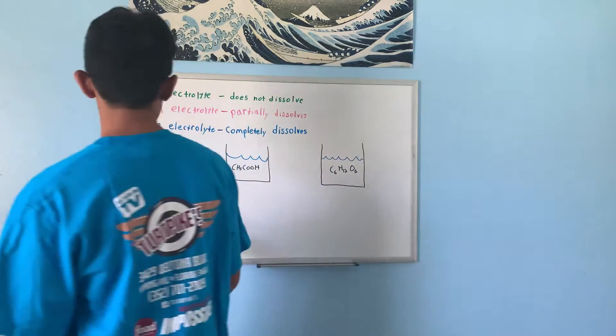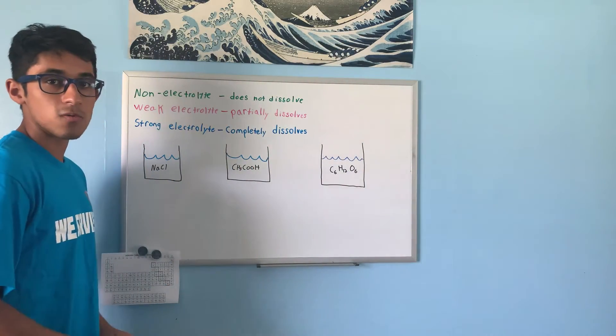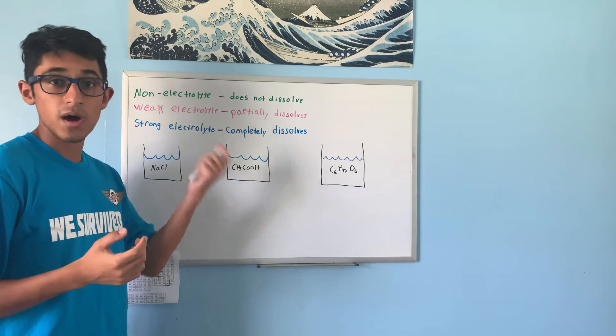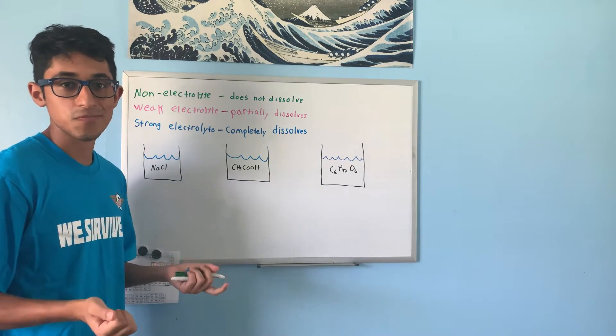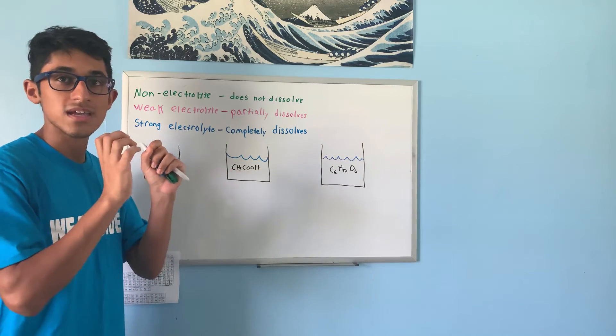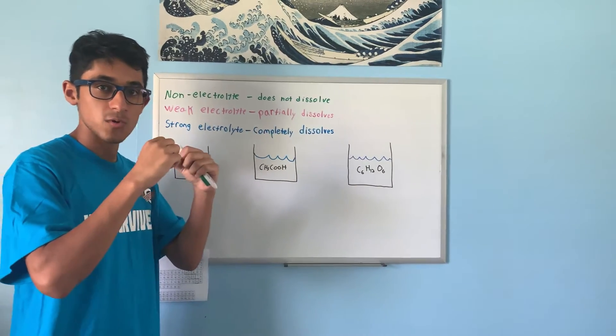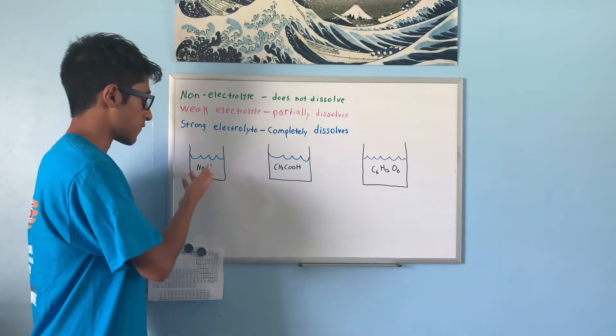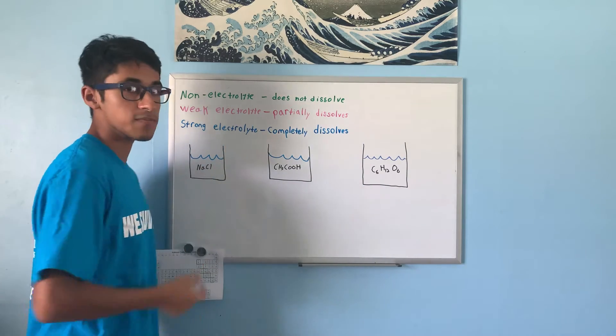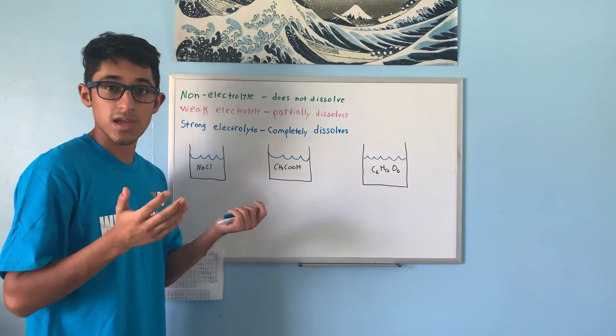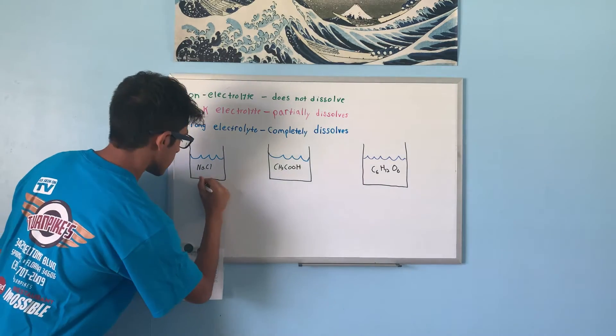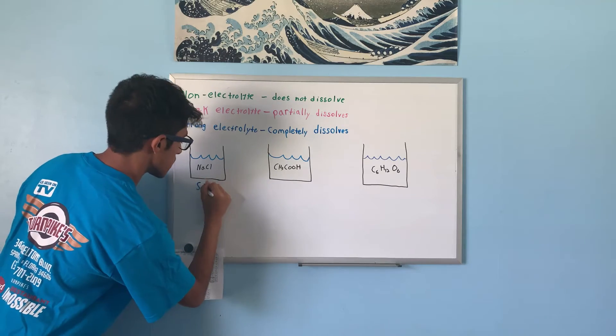First, we have NaCl, sodium chloride. We know that it is an ionic compound with a positive cation and a negative anion. When you dissolve it in water, the ion-dipole forces pull the molecule apart, creating two charged particles - a positive sodium and a negative chlorine. This allows a current to pass through, so it can be identified as a strong electrolyte.